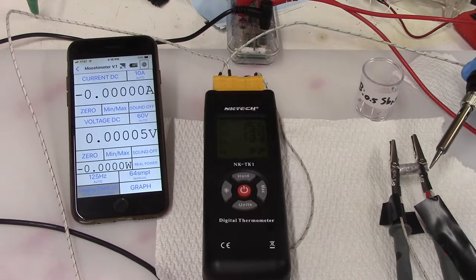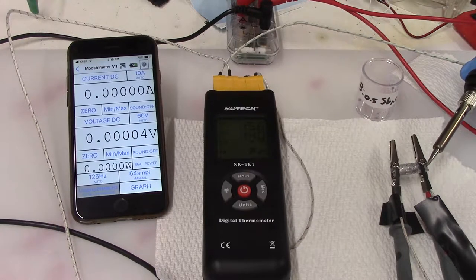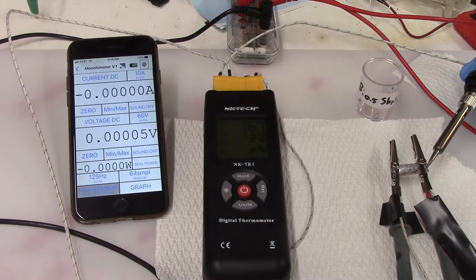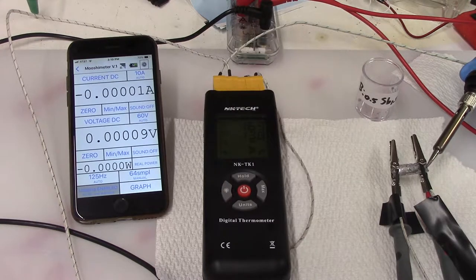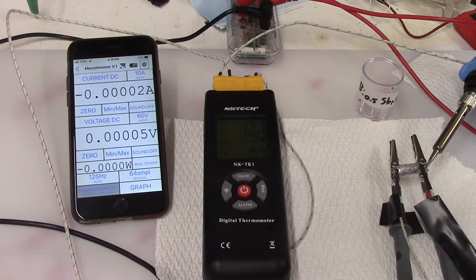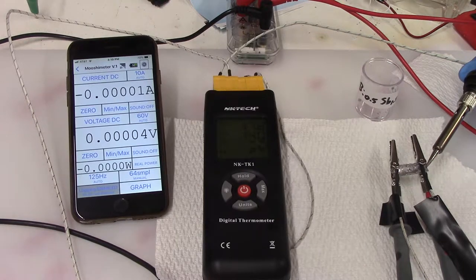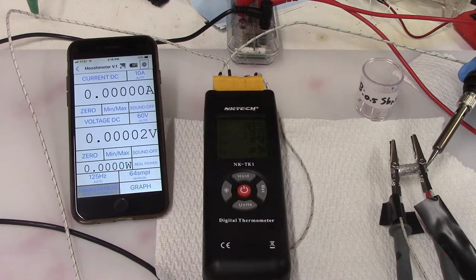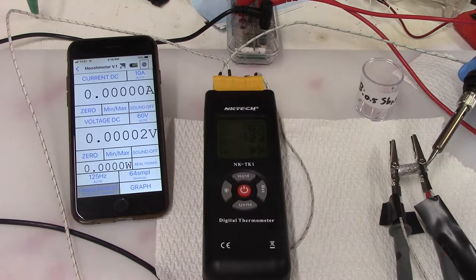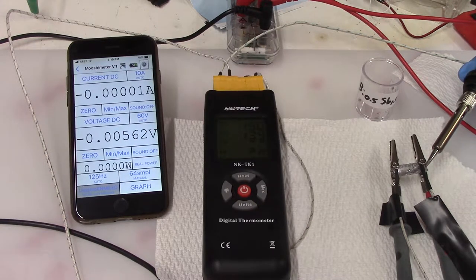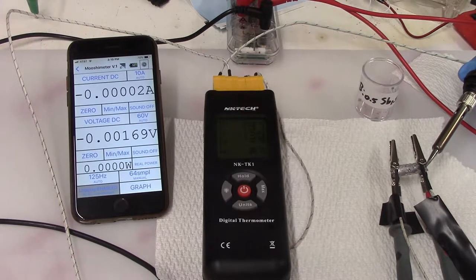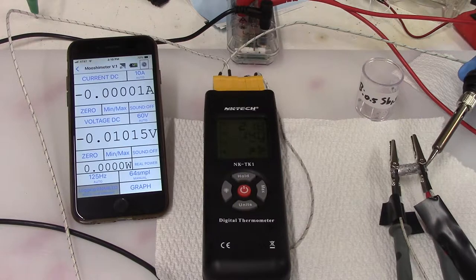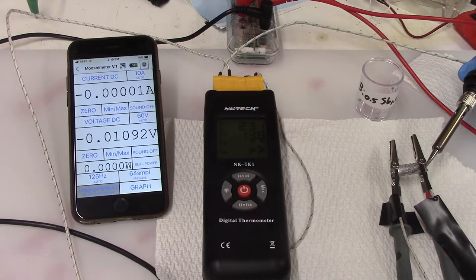And being a P-type thermomaterial, that means when I heat this right side, the voltage should go negative. There it goes, starting to go negative. Alright, this is about 10 degrees difference.